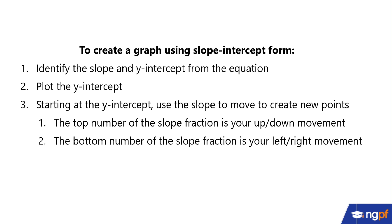To create a graph using slope-intercept form, we first identify the slope and the y-intercept from the equation. Then we plot the y-intercept — it's a point where the line crosses the y-axis. After that, we use the slope to generate new points starting at the y-intercept. Slope is rise over run: the top number tells how much up or down movement, and the bottom number tells how much left or right movement.